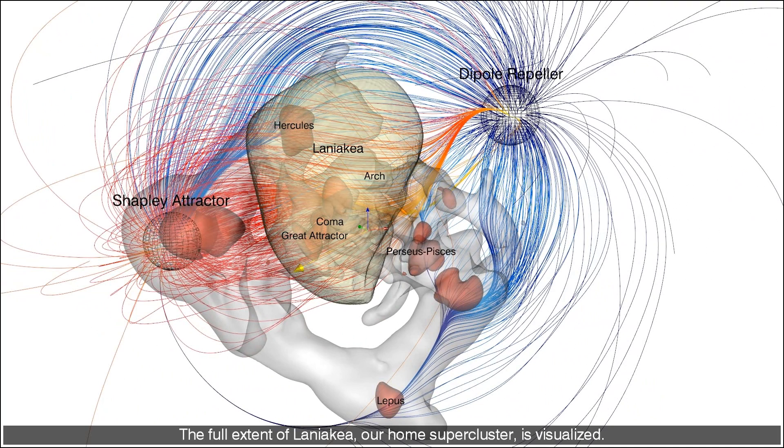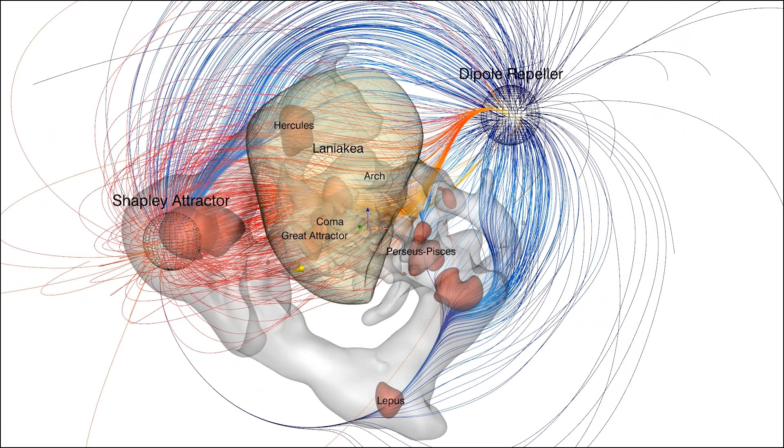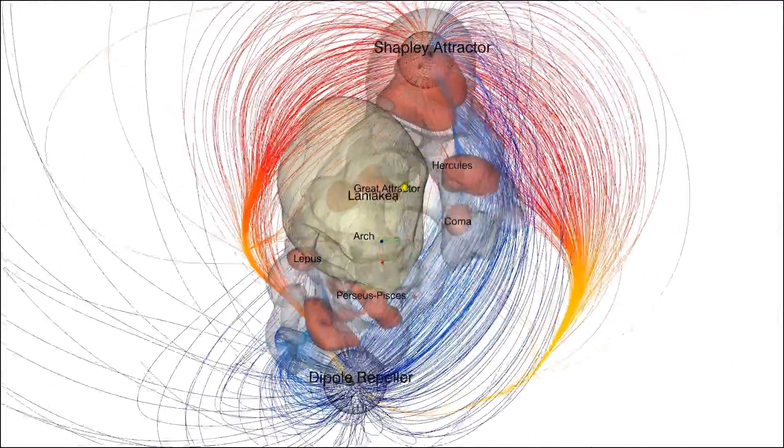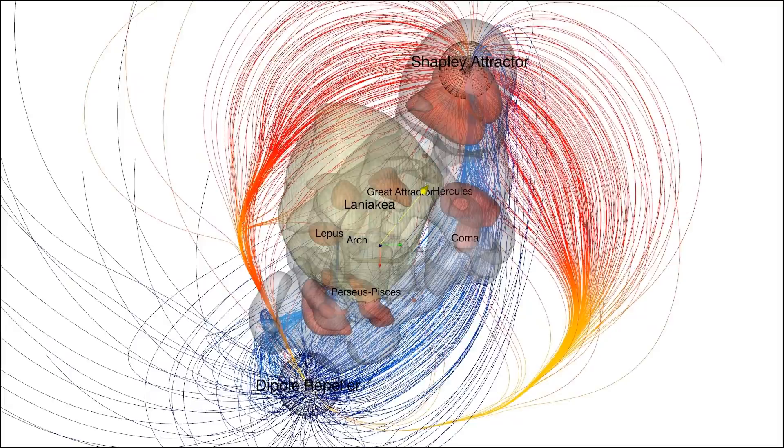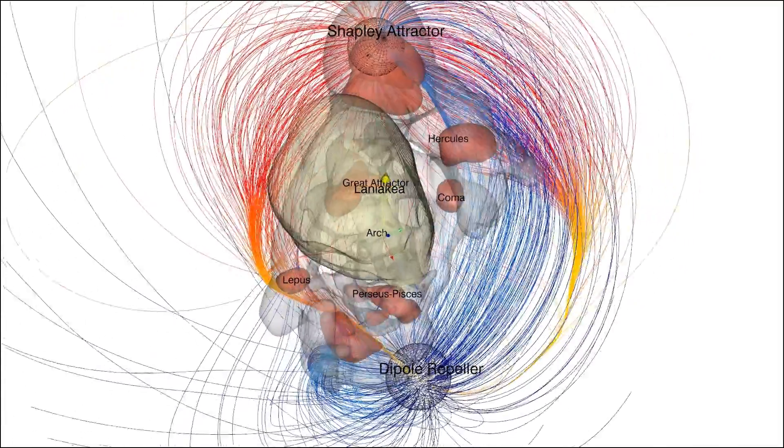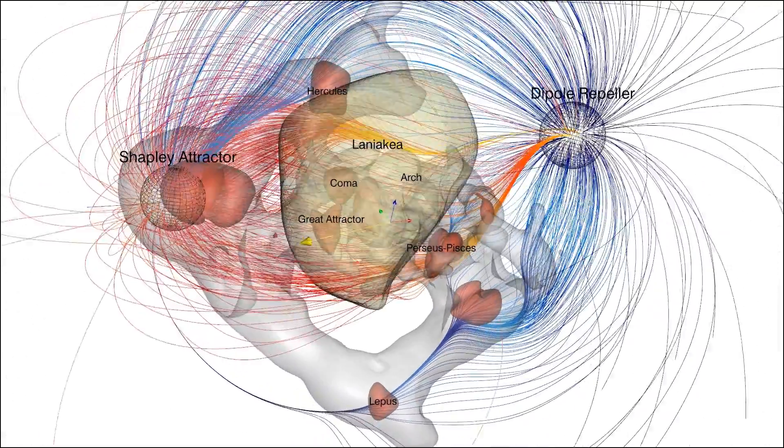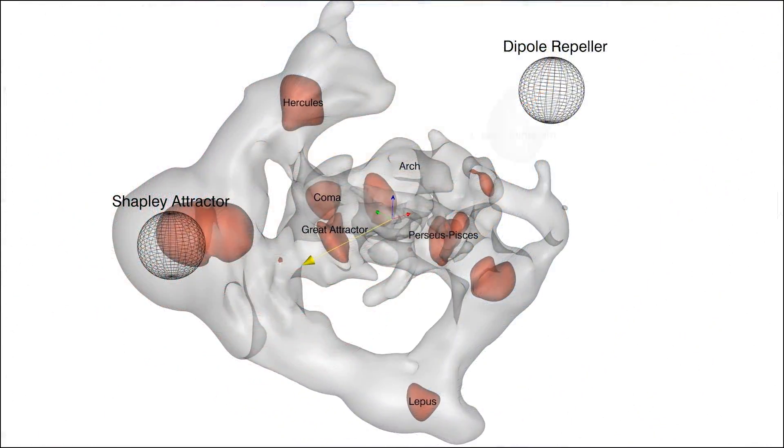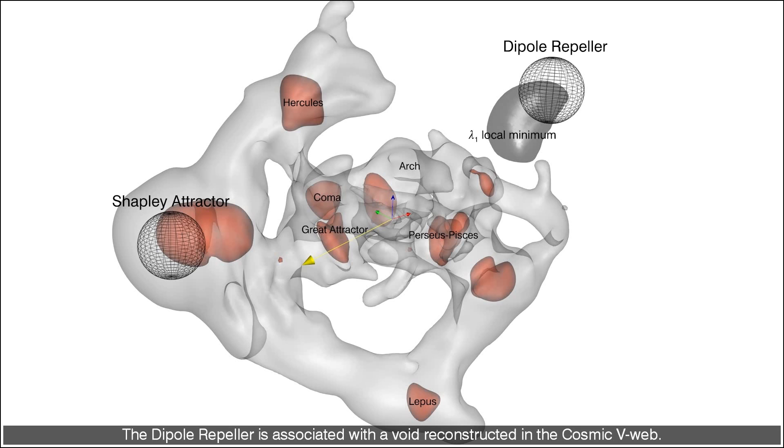The full extent of Laniakea, our home supercluster, is visualized. The dipole repeller is associated with a void reconstructed in the cosmic web.